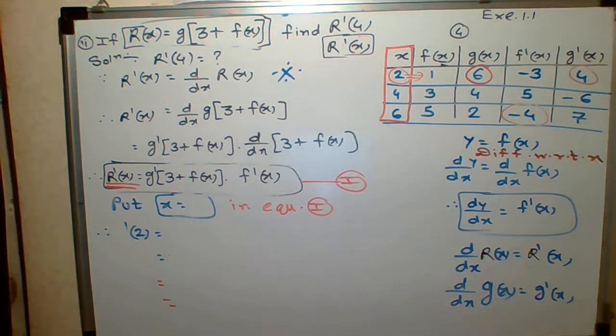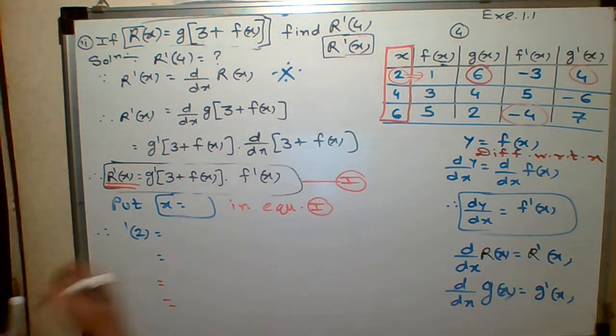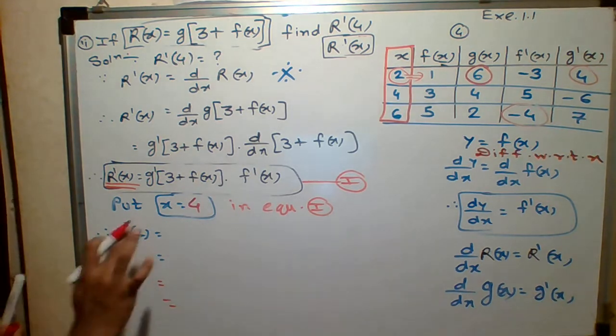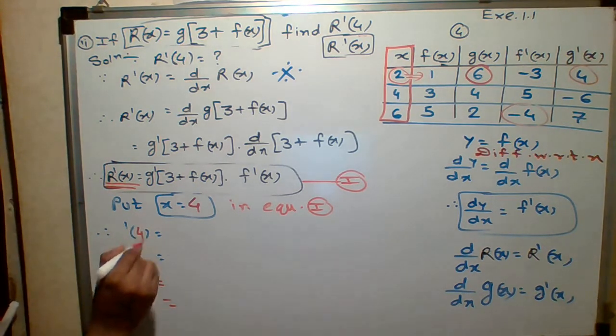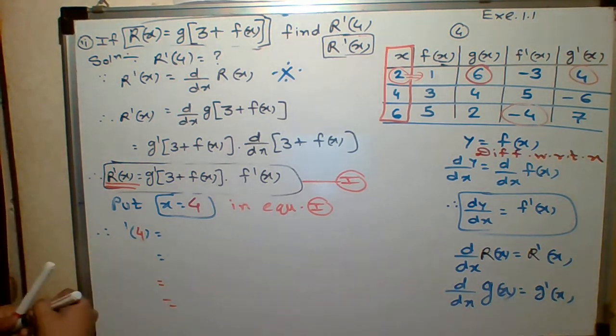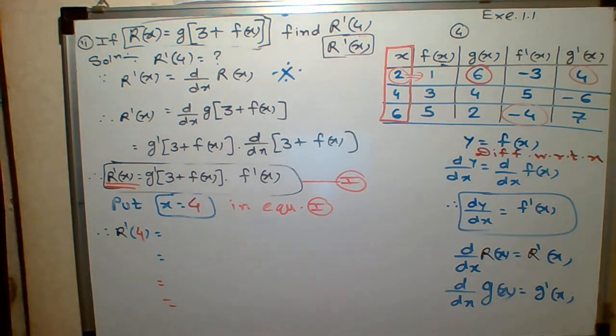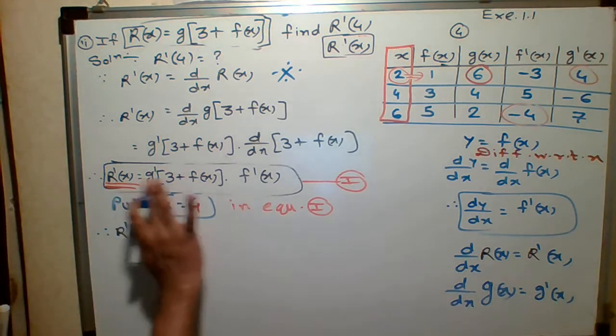Now what do I need to put on X? What I am going to put on X? 4. Put on X, 4. Students, what will come from here? 4. And here students, R dash of 4. Let me first put 4. Don't think first. Put 4 where there is X.